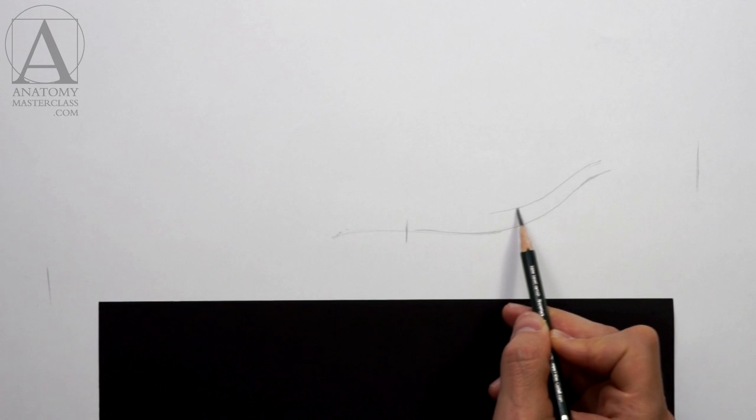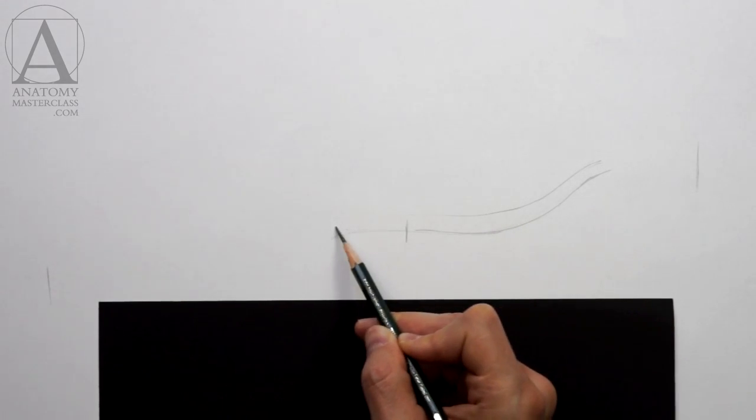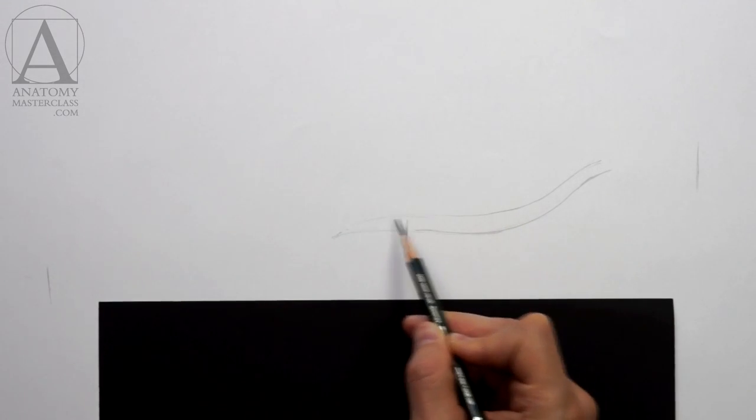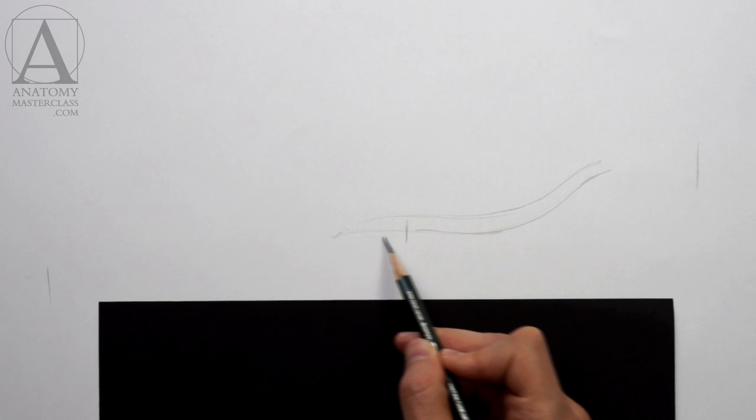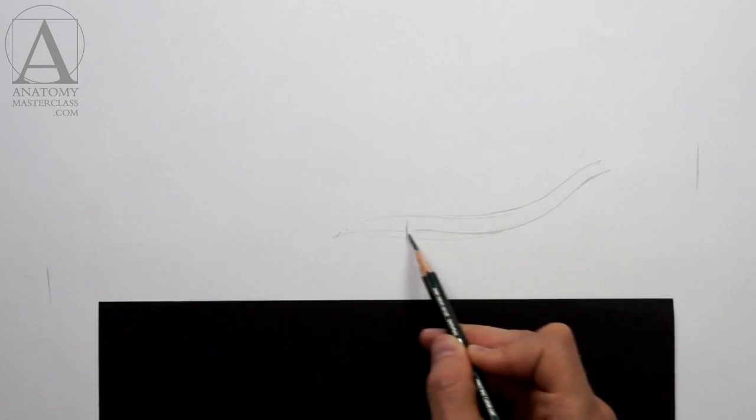The spine has characteristic arches at the neck, ribcage, waist, and pelvis regions. Every region is arched into a position that is opposite to the previous one.